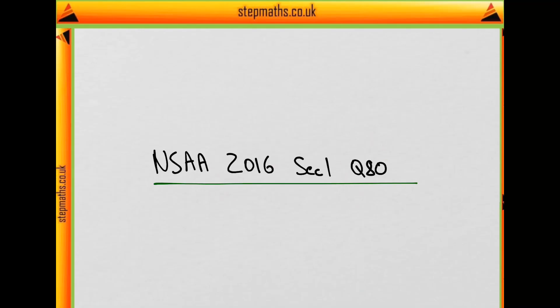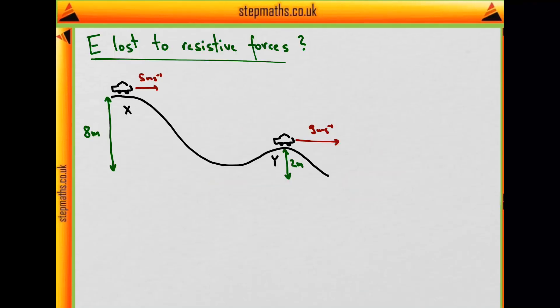This is question 80 from a 2016 exam. In this question, we have a car traveling on a fairground ride with an initial speed of 5 meters per second at point X, 8 meters above the ground. It then goes down and up a bit to a point called Y, 2 meters above the ground, where it travels with a speed of 9 meters per second.